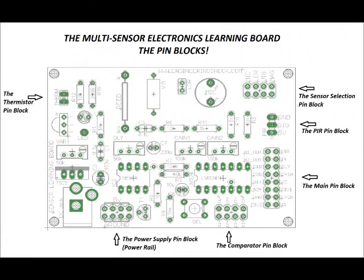Here are the pin blocks on the multi-sensor electronics learning board. On the upper left, the thermistor pin block. On your V2.0 boards, you can plug in the thermistor attachment here. There is no polarity. On the lower left, the power supply pin block, also known as the power rail, has eight pins. On the top side, there are four 5-volt pins to power external circuits. And the bottom pins are ground.